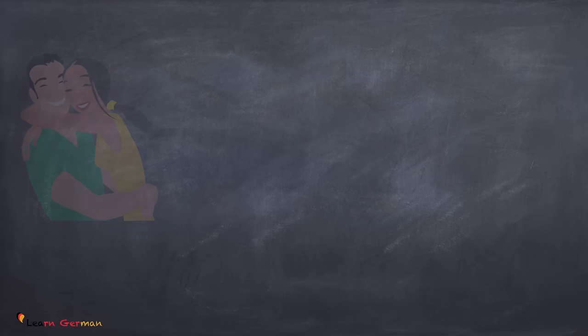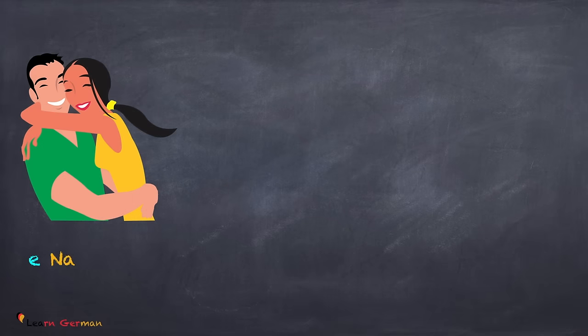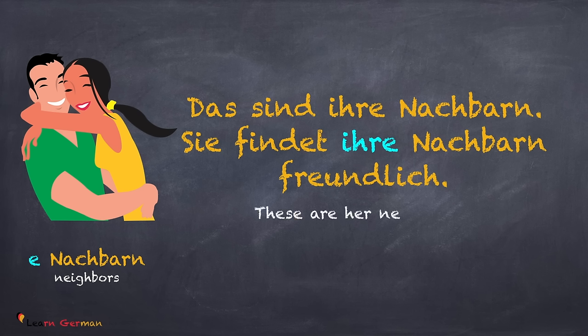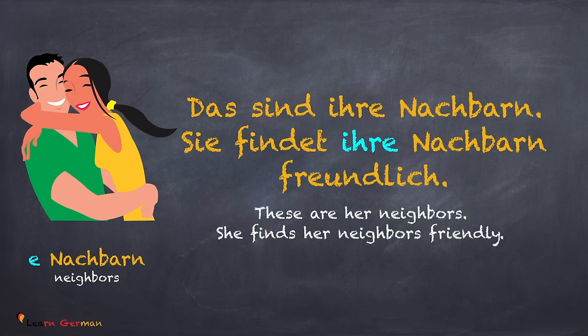And the same goes for plural. Das sind ihre Nachbarn. Sie findet ihre Nachbarn freundlich. Here also, ihre remains ihre.